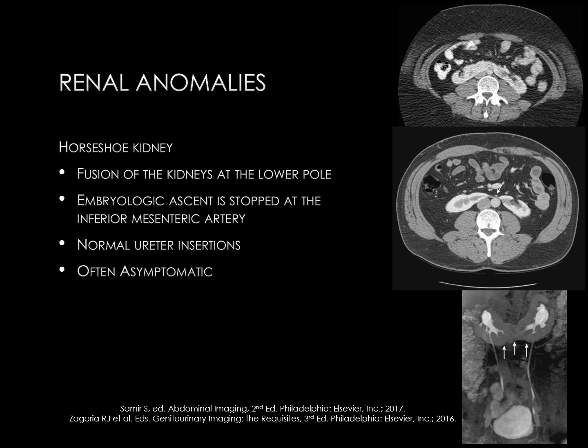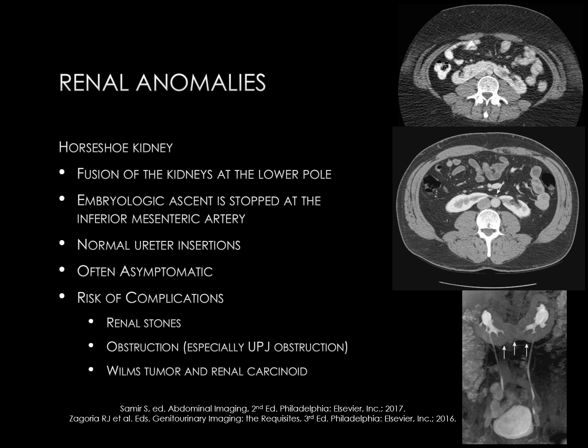This is often an asymptomatic condition. It's very common, occurring in 1 in 400 to 500 adults, but there are some complications that can occur. Patients with horseshoe kidney are at higher risk of renal stones, renal obstruction — especially UPJ obstruction — and they have a slightly higher risk of several rare renal tumors, such as Wilms tumor and renal carcinoid.